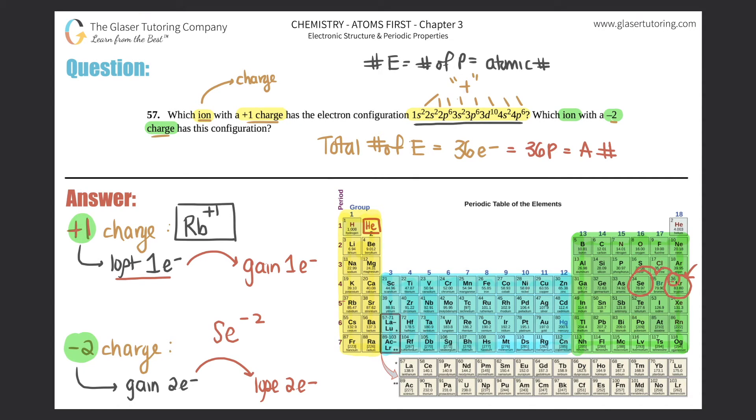It was really selenium. This was Se with a negative two charge. It was selenium, but then it gained two to become krypton. That's the answer to the second one: Rb plus one was the ion with plus one charge, and selenium negative two had the negative two charge.